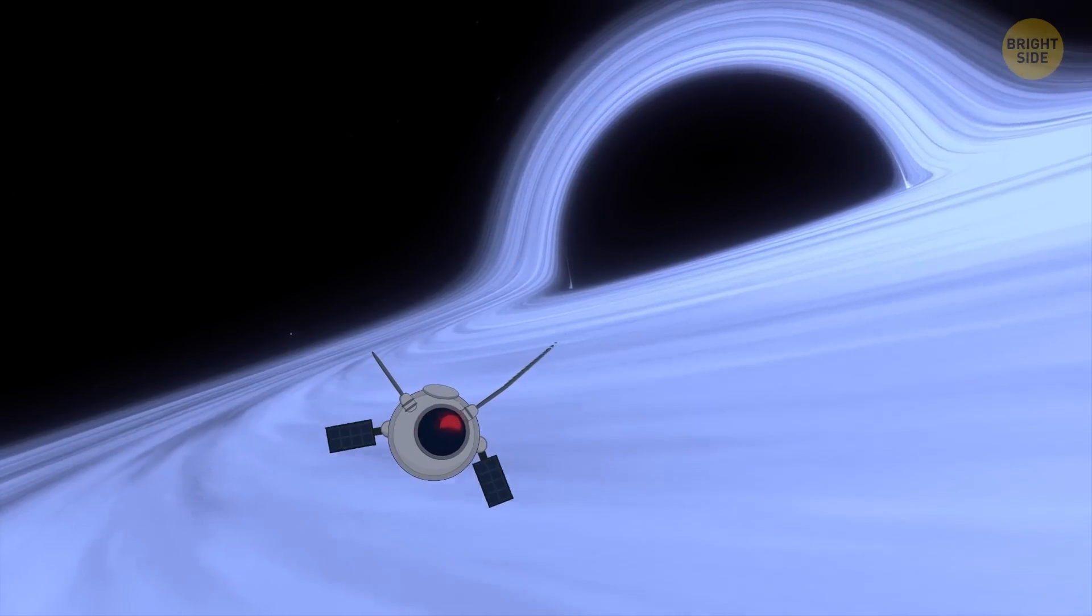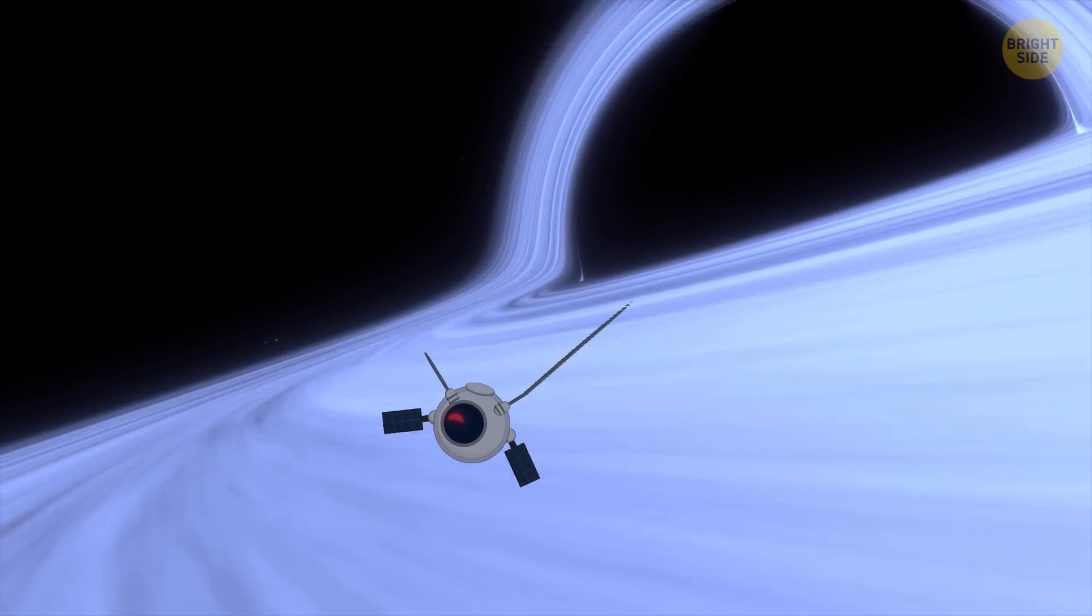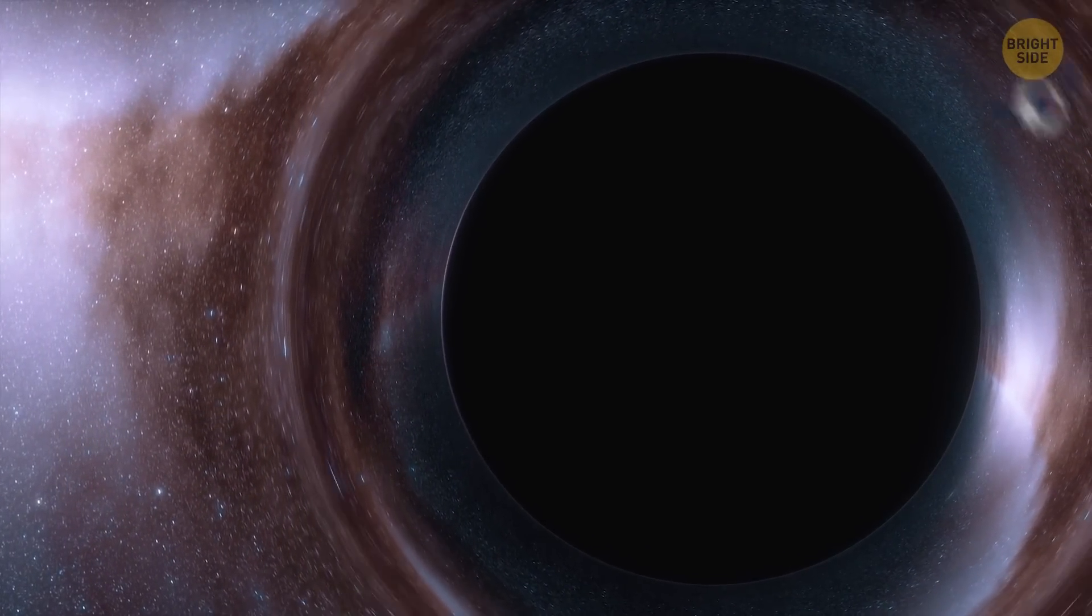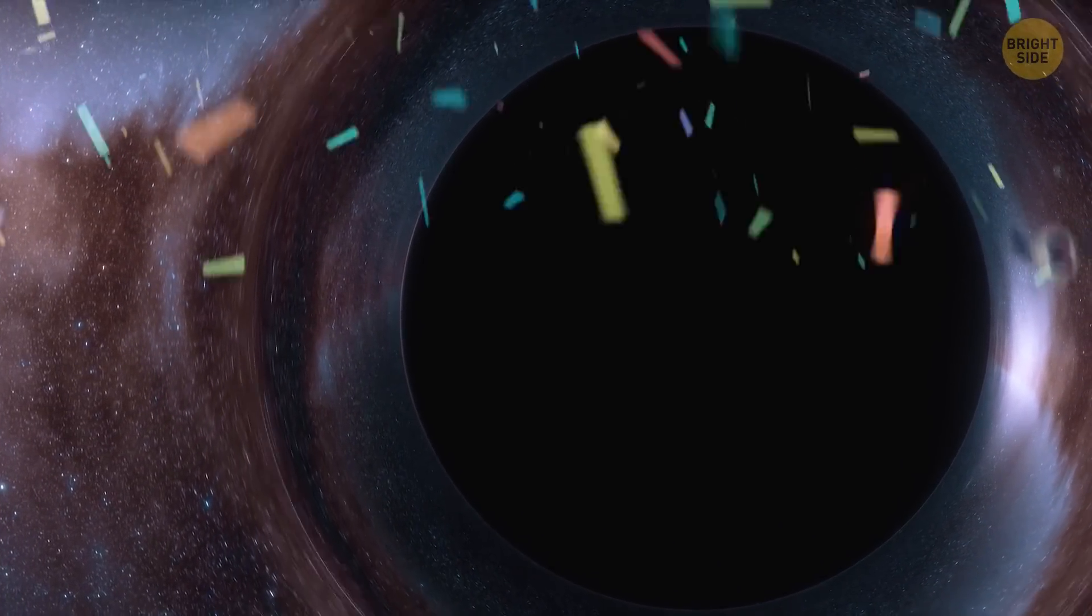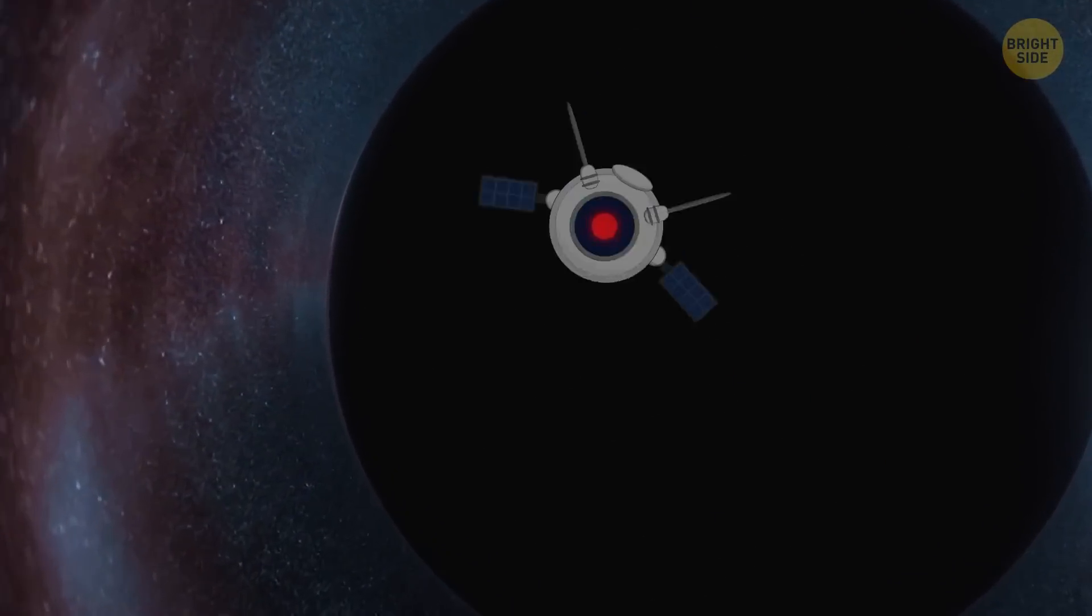After a few minutes, the force of attraction begins to strengthen, and the drone starts to stretch like spaghetti. When it begins spinning around the black disk, it means it has reached the event horizon and has started its descent into the black abyss. Now, let's look at everything from the drone's perspective.